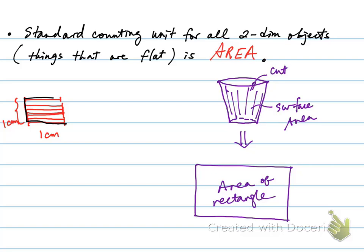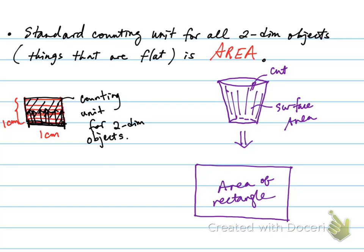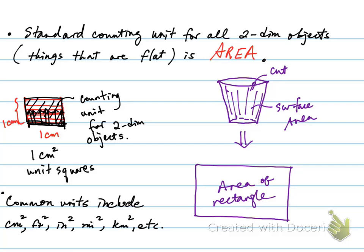Suppose you've stacked one centimeter's worth of those line segments. The result is a square with length one centimeter on all four sides. Another way to visualize this is: if you start with the one-centimeter base, you can imagine pulling or sweeping this line up to fill the entire space up to where the one-centimeter mark is. So the counting unit for all two-dimensional objects is one centimeter squared. These are also known as unit squares. The common units for finding areas include one centimeter squared, feet squared, kilometers squared, miles squared, and inches squared.